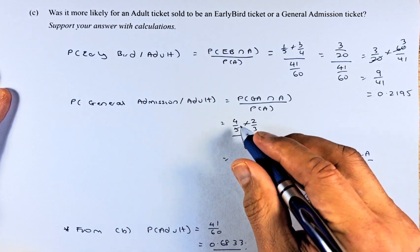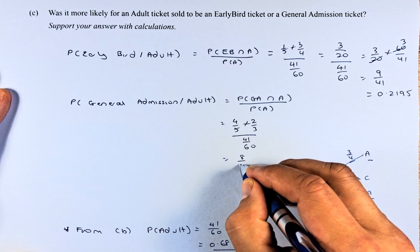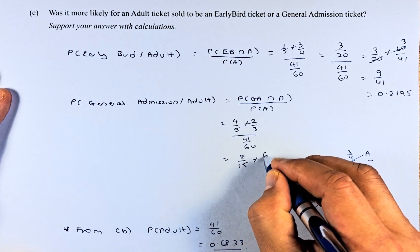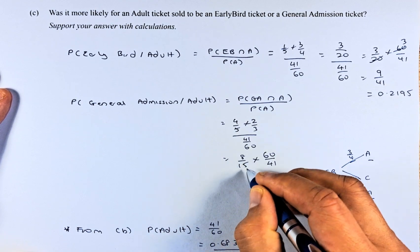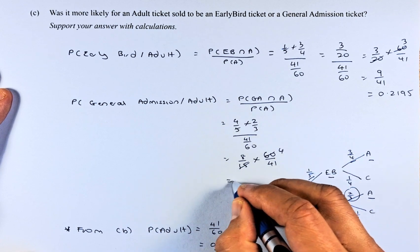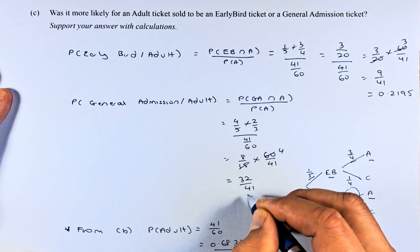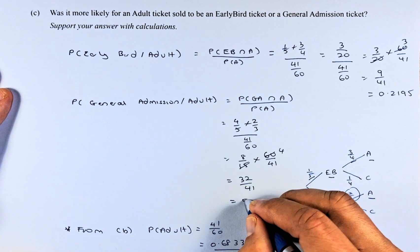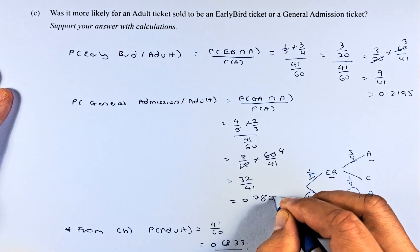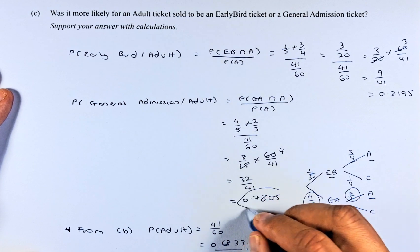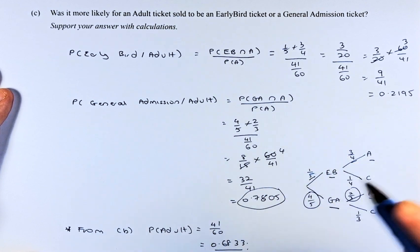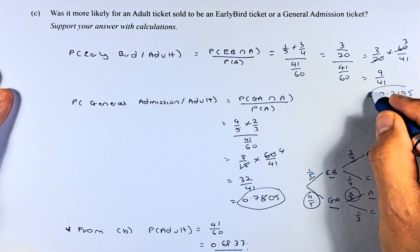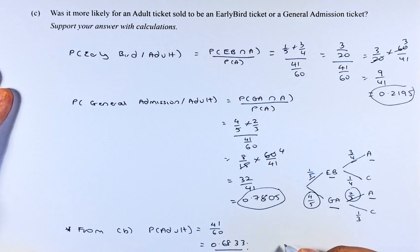4/5 times 2/3 equals 8 over 15. Multiply by 60 over 41, and after canceling, we get 32 over 41, which equals 0.7805. You can see 0.7805 is much bigger than 0.2195, so now we can answer the question.